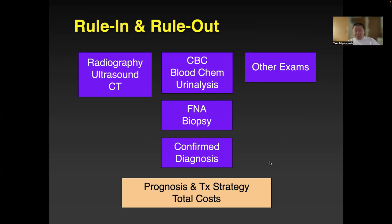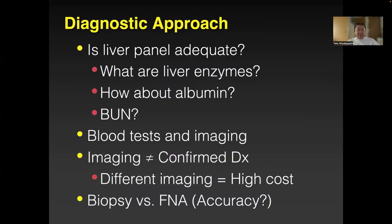For a liver panel, check liver enzymes, albumin, BUN, and CRP — include all those blood tests. Imaging is also combined. Most of the time, imaging doesn't give you a confirmed diagnosis — it gives you a differential diagnosis. Imaging can be expensive: ultrasound, radiography, CT. But sometimes it's needed. As for biopsy versus FNA — biopsy is better. A liver biopsy maybe a couple of cubic centimeters gives very important information.